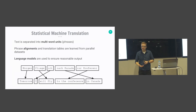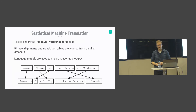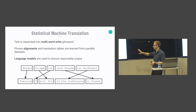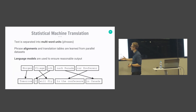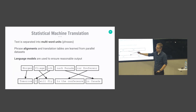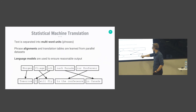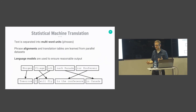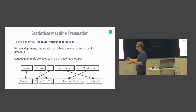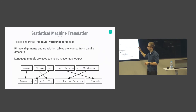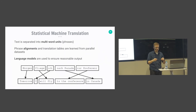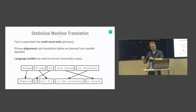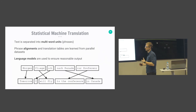The classical approach to error correction is a statistical machine translation model. This separates text into phrases, learns an alignment between phrases in each language, and builds translation tables. A language model then ensures that the output produced by stitching together different phrases remains fluent and makes sense.